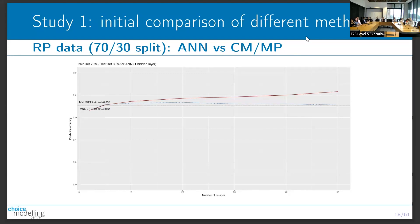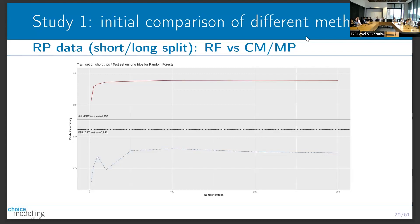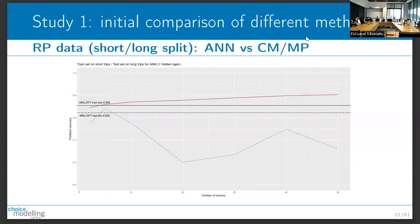What happens if I split the data into short and long trips? On the choice modeling and mathematical psychology models, I lose more in validation than before, as expected, because now I'm forecasting outside the distribution. But you can see the machine learning models now drop below the choice models in prediction. The same happens with random forests, and it becomes even worse with neural networks. In estimation, all three machine learning methods perform better than choice modeling and mathematical psychology, but once I look at forecasting out of distribution, they perform worse. This is clearly important when doing policy work and forecasting for the future.